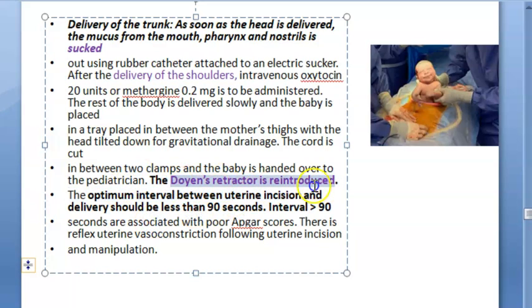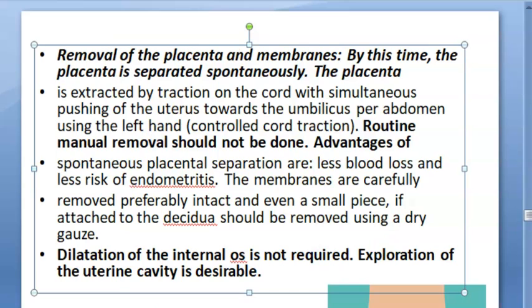Now what they will do once the baby is out, here they are saying that you'll put the Doyen's retractor back. The time that you make the uterine incision and the delivery should happen within 90 seconds. So now what should come out? The placenta and membranes. The placenta is separated spontaneously. You should not pull it. You have to do traction on the cord. In normal delivery, they teach you controlled cord traction.